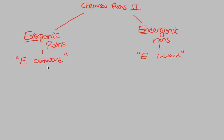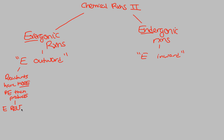Exergonic reactions — energy outward reactions — involve reactants that have more potential energy than products. The overall outcome of this is that energy is released. And in most situations for metabolism, specifically in biology, energy is released through chemical reactions in cells, through cellular processes.